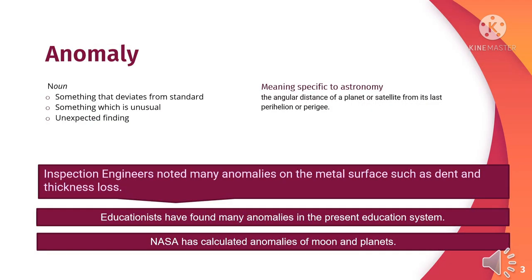Word anomaly is a noun. It means something that deviates from standard, or something which is unusual or an unexpected finding. The angular distance of a planet or satellite from its last perihelion or perigee is also called anomaly. Now its usage: inspection engineers noted many anomalies on the metal surface such as dent and thickness lock.